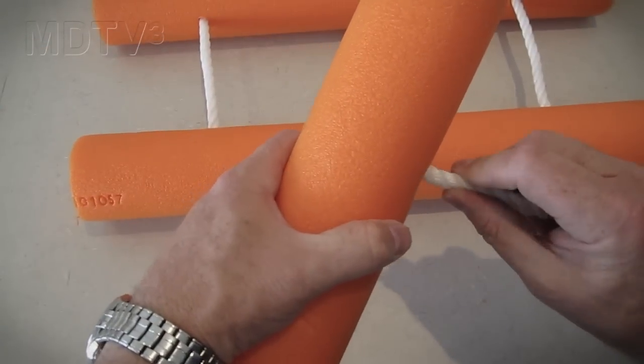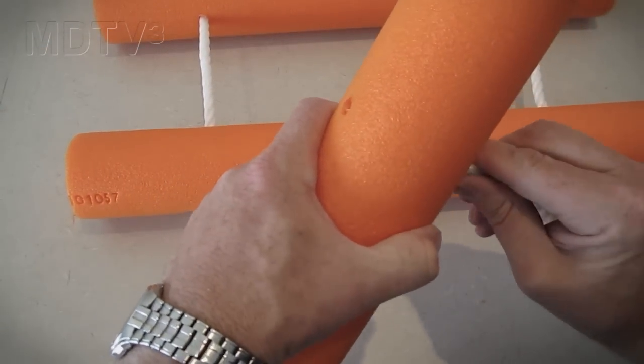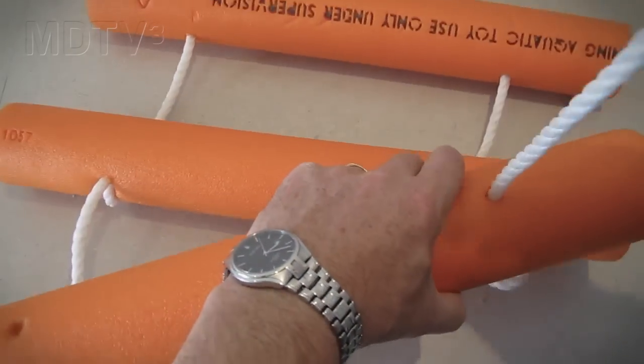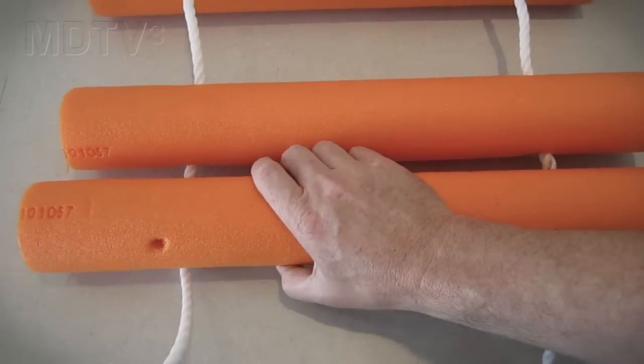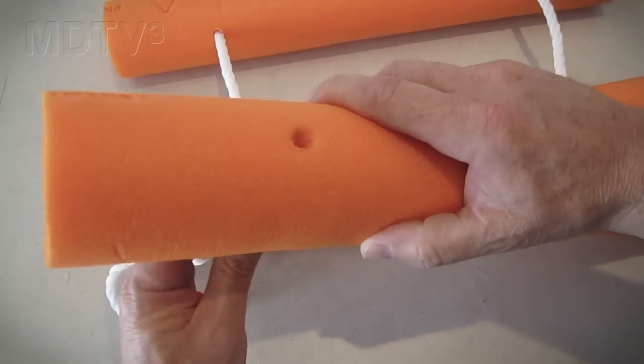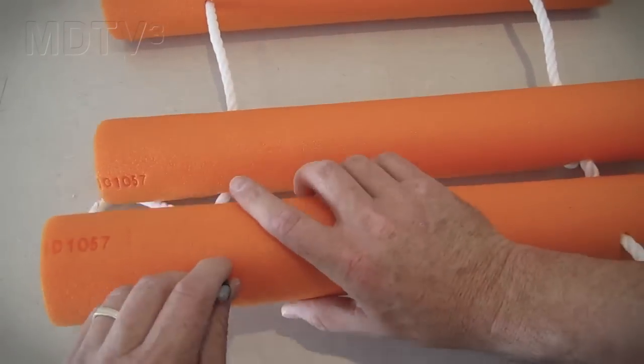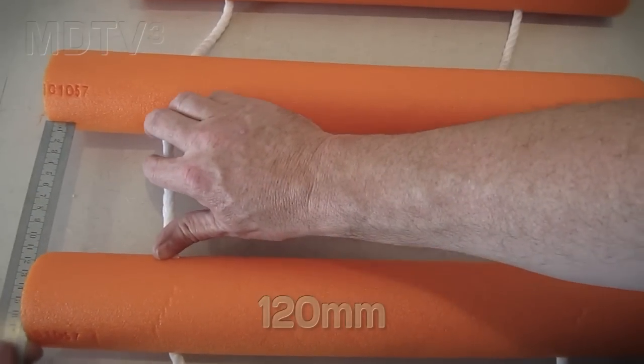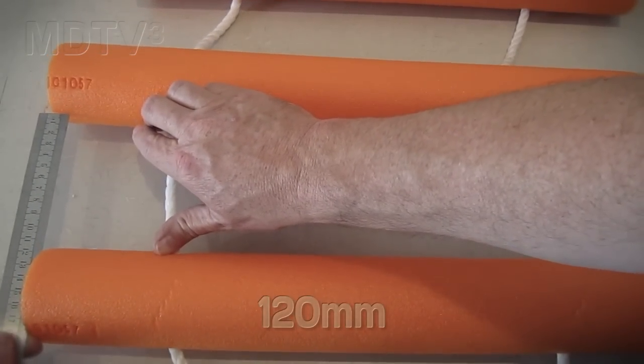Continue pushing the rope through a third section of the pool noodle. Thread the other side of the rope through the remaining hole. Position the pool noodles so that they are approximately 120 millimeters apart.